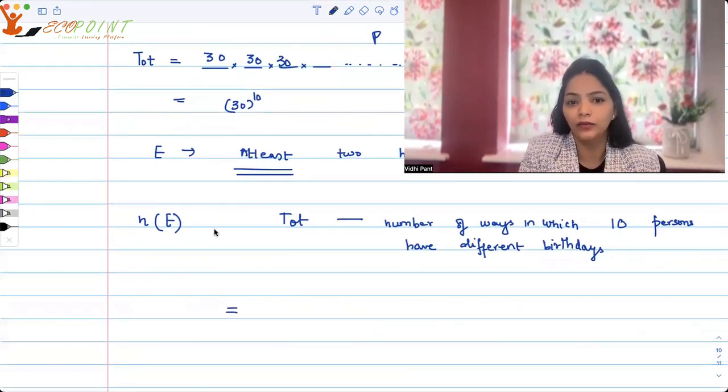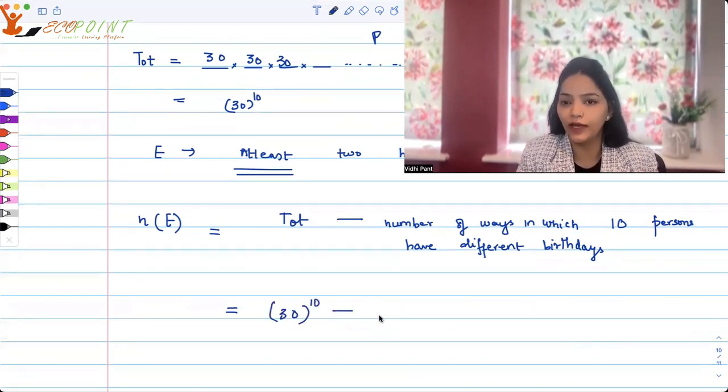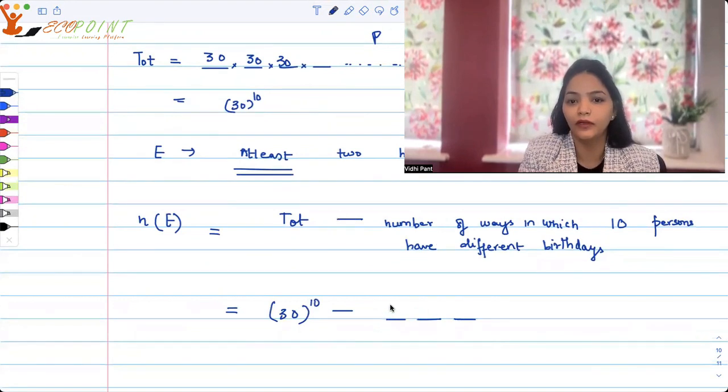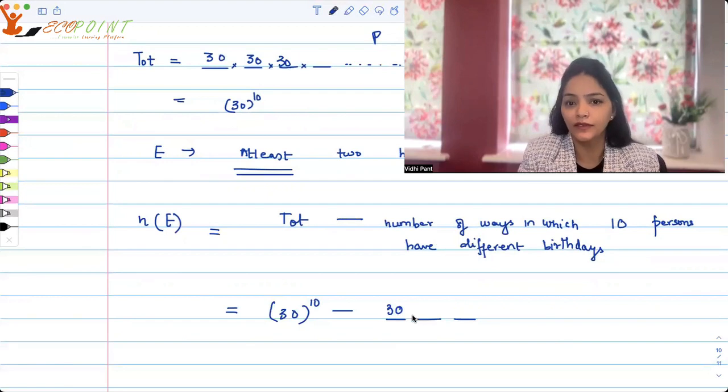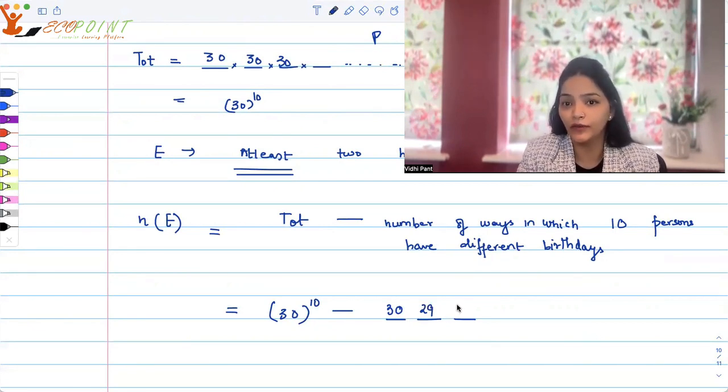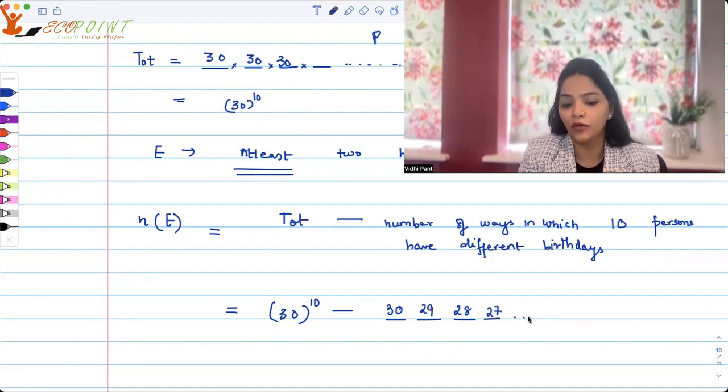So total ways we already know is 30 to the power 10. And the number of ways in which all of them have different birthdays would be, let's again think in terms of cases. So we are 10 people in a classroom. If I say that I have an option of all 30 days, but my birthday is different from all of you, then the next person sitting with me will only have 29 options for his or her birthday. The next person can't share his or her birthday with me or you. So 28, then 27, so on and so forth. It will go on till there are 10 people.